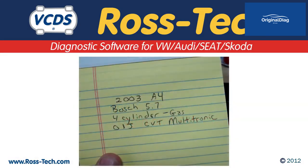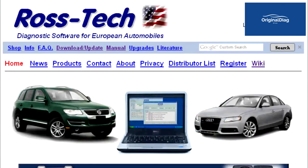Now that we've gathered all the data on the car, we are ready to generate the login and coding. RossTech has the charts needed on our wiki website for this. You need to use the charts specific to the application you are working with — again, our example here, a 2003 Audi A4 with Bosch 5.7.